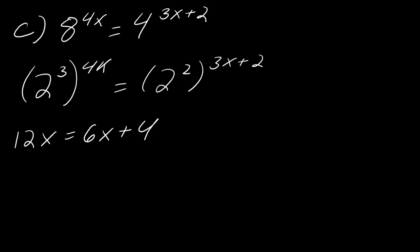But now we can go ahead and just solve as usual. So this is going to be subtract off the 6x. So I get 6x equals 4, divide both sides by 6, and I will get that x equals 2 thirds.